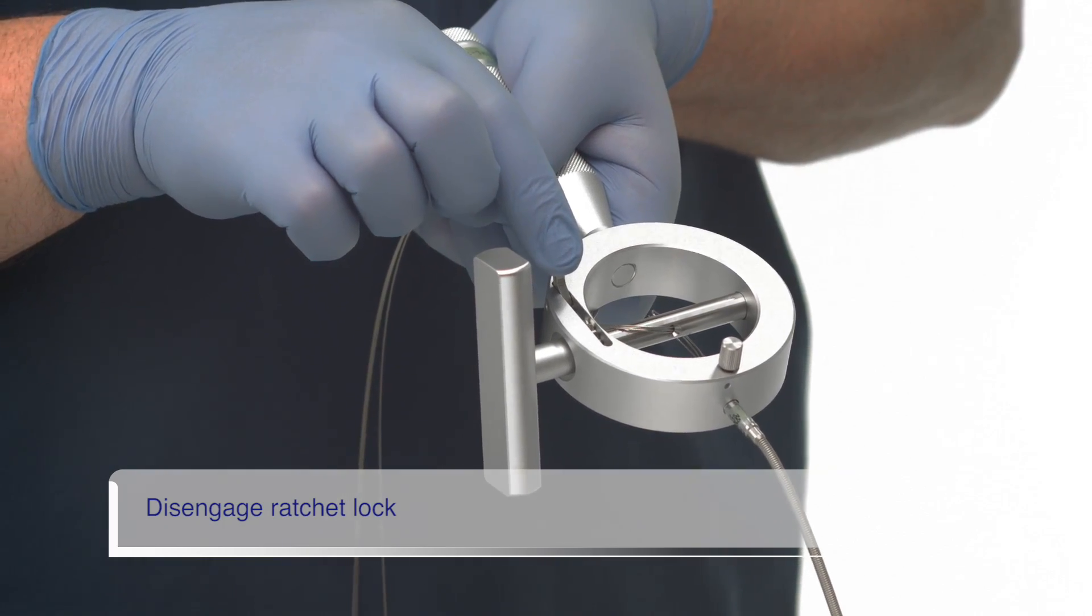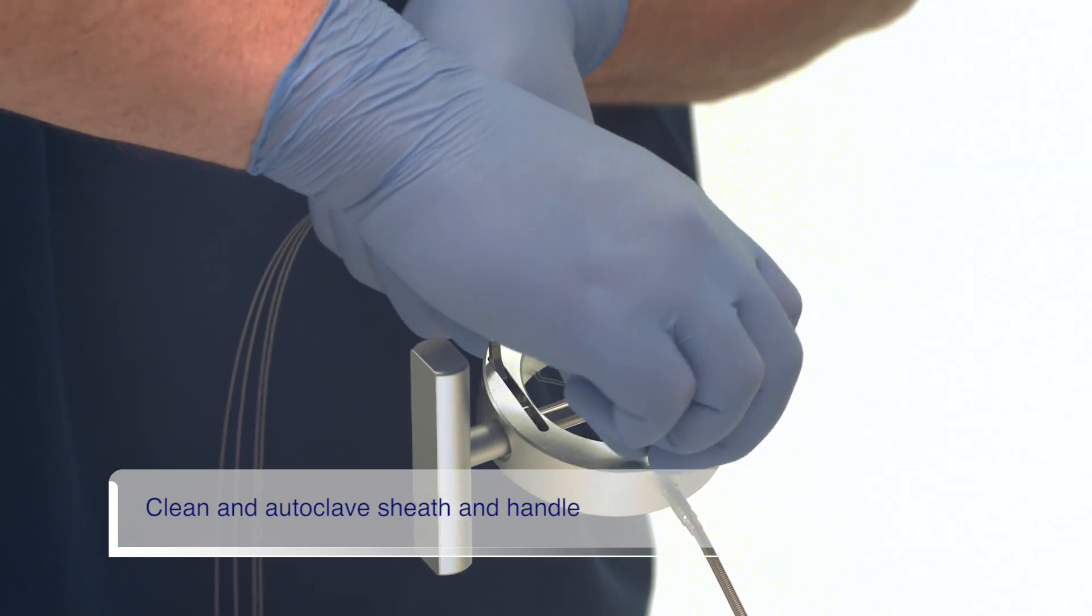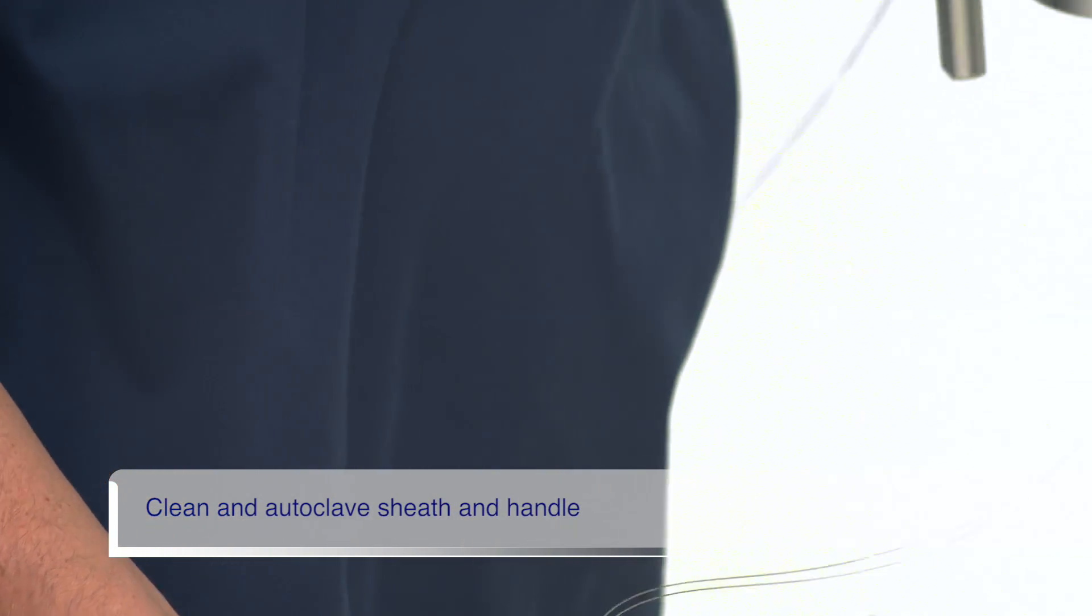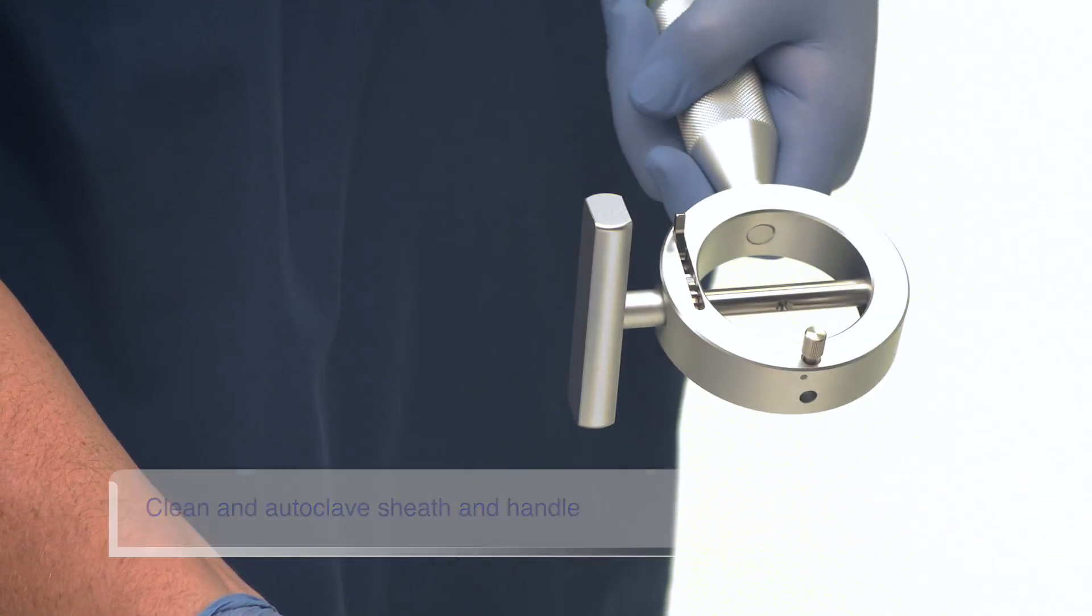Remove the devices from the patient. After the procedure, dispose of the basket. The coil sheath and emergency handle are disassembled, cleaned, and autoclaved, after which they may be used again. Thank you.